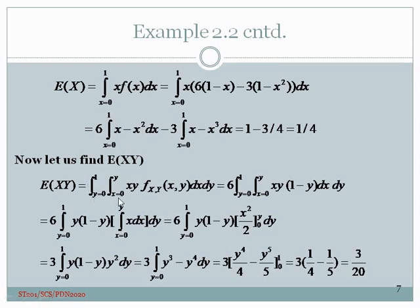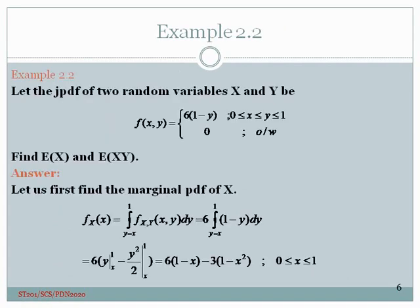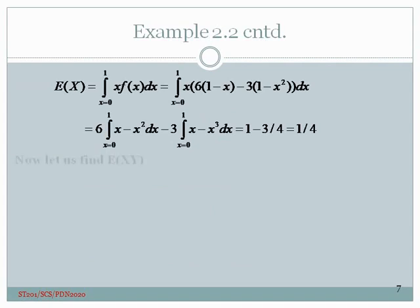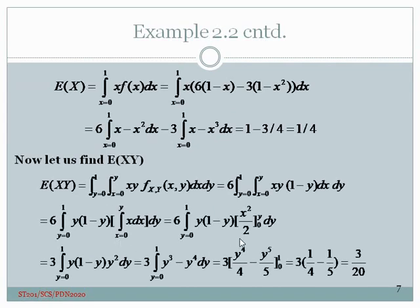To find E[XY], multiply x times y by the joint PDF and integrate. You must be very careful about the limits of integration. If integrating y first then x, y goes from x to 1 and x goes from 0 to 1. If integrating x first then y, x goes from 0 to y and y goes from 0 to 1. Performing the integration gives the answer 3/20.